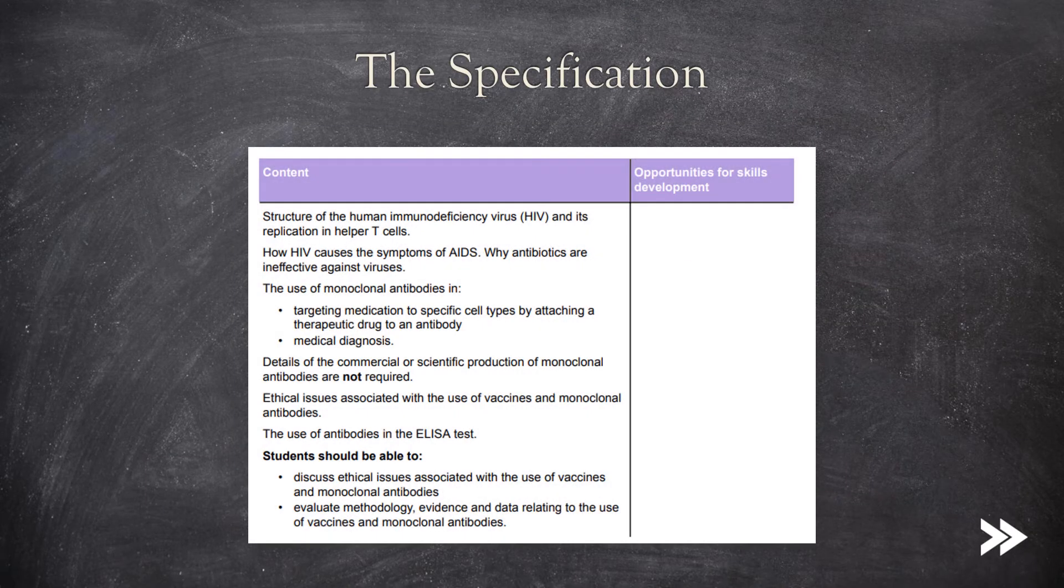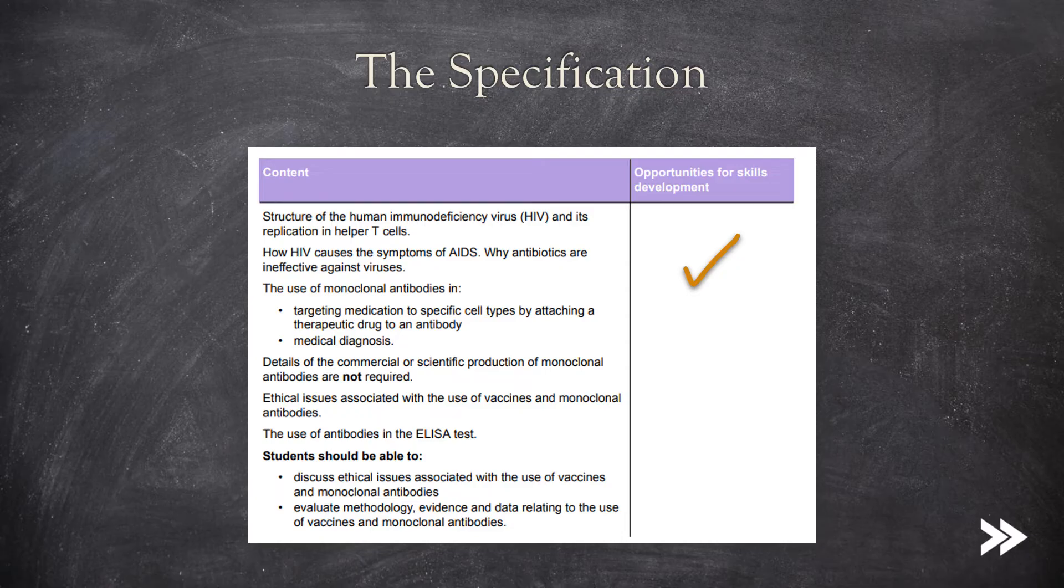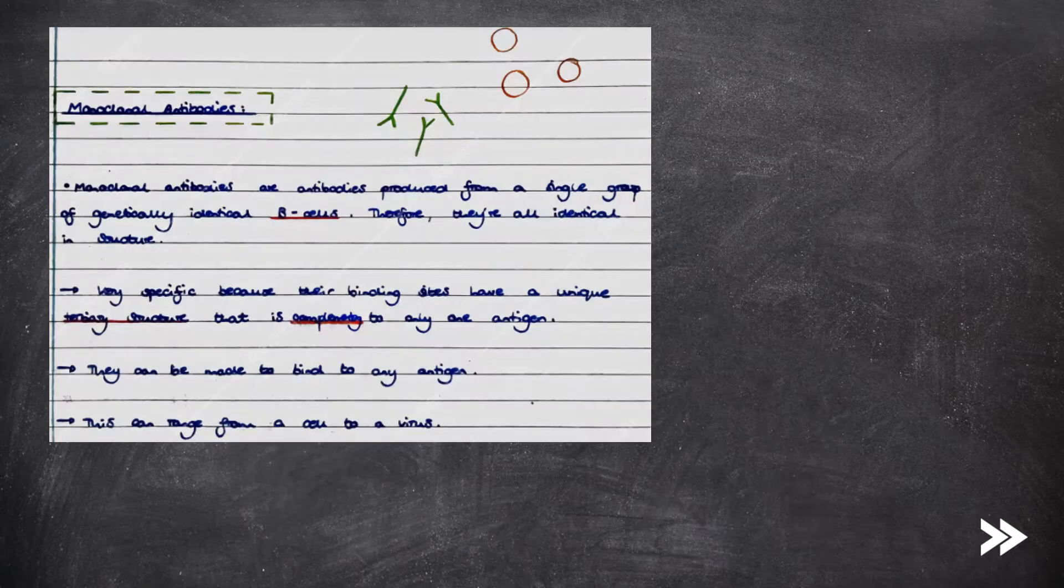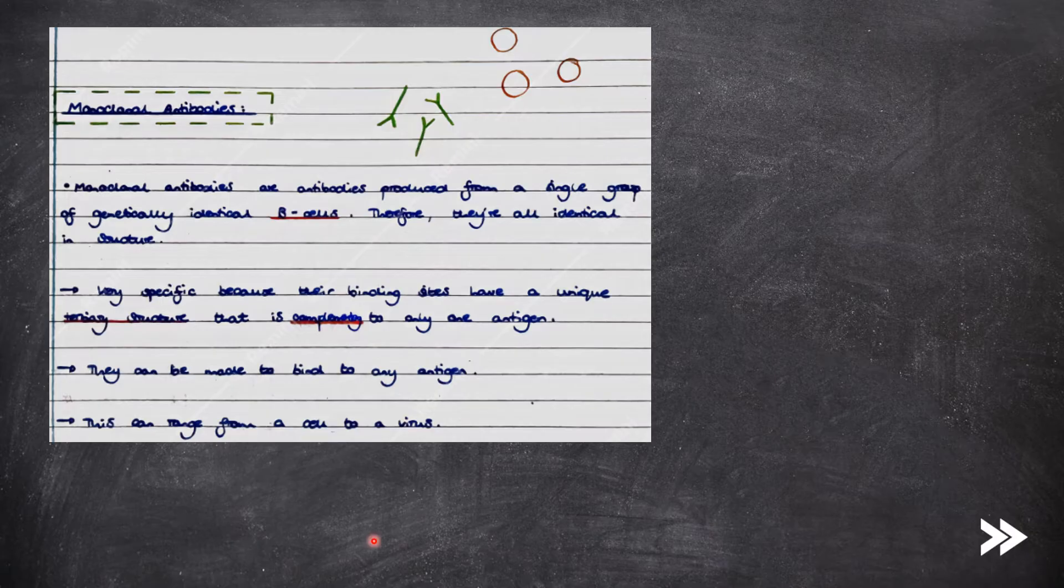So now that we've covered HIV and why antibiotics are ineffective against viruses, we finally need to have a look at monoclonal antibodies and the ELISA test. So let's start with monoclonal antibodies, which are antibodies produced from a single group of genetically identical B cells.